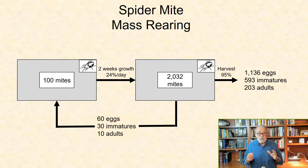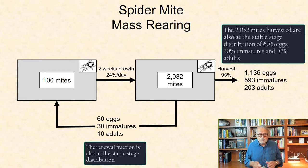An important perspective of the harvesting model shown here is that the spider mite population is maintained at the stable stage distribution of approximately 60% eggs, 30% immatures, and 10% adults in both the renewal and the harvested components.